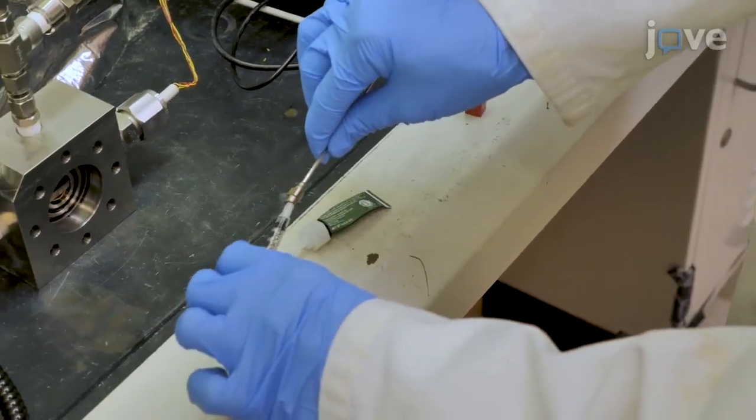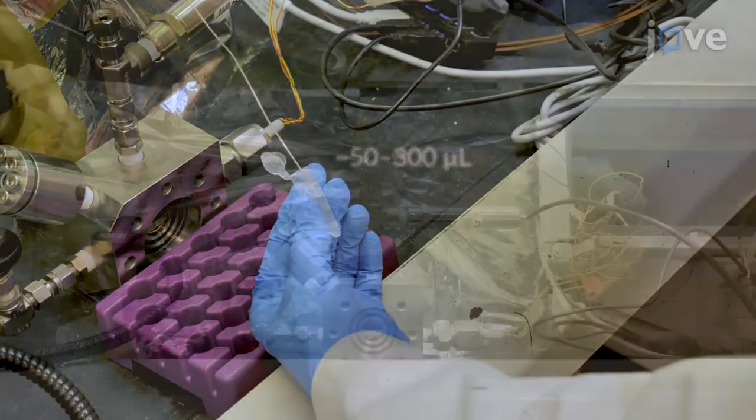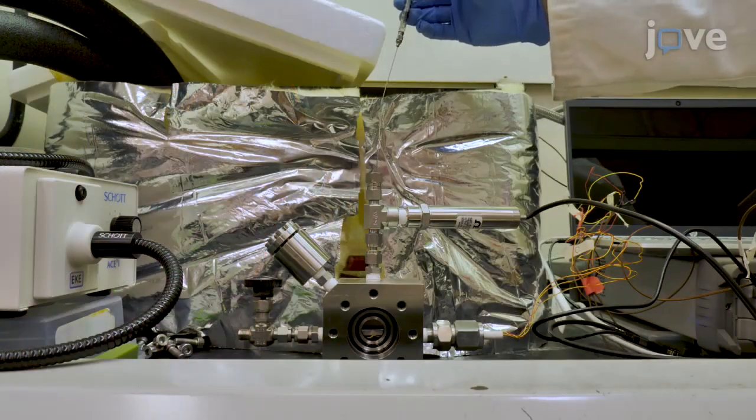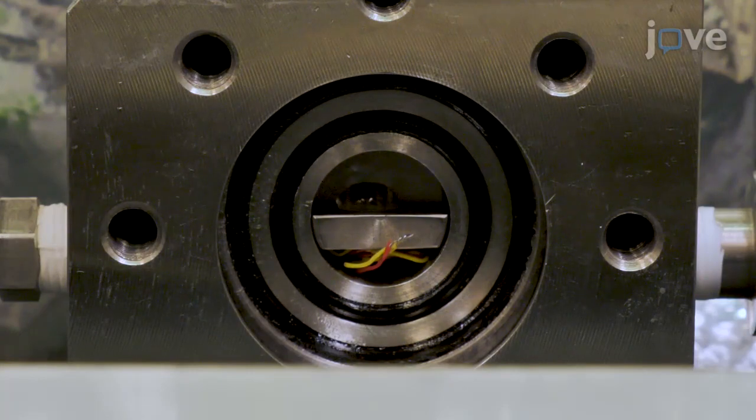Attach a 1 mL syringe to the cannula and pull in the desired volume of deionized water. Without the needle valve or sapphire window attached, insert the end of the cannula into the top port and practice expelling the droplet onto the center stage.